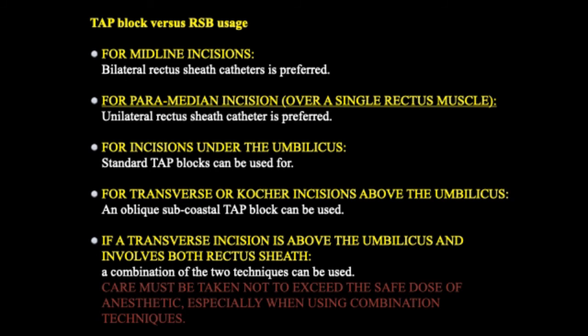There is always a debate whether to use TAP blocks or rectus sheath blocks. Our review concludes the following: for midline incisions, bilateral rectus sheath catheters is the preferred method. For paramedian incisions or incisions over a single rectus muscle, unilateral rectus sheath catheters is preferred. For incisions below the umbilicus, standard TAP blocks can be used. For transverse or Kocher incisions above the umbilicus, an oblique subcostal TAP block can be used. If a transverse incision is above the umbilicus and involves both rectus sheaths, a combination of both techniques can be used. Care must always be taken not to exceed the safe dose of anesthetics, especially when using combination techniques.